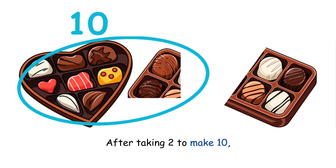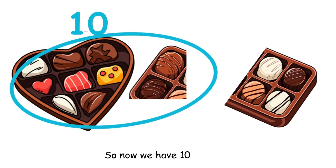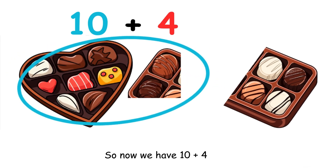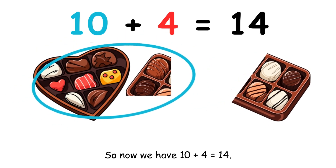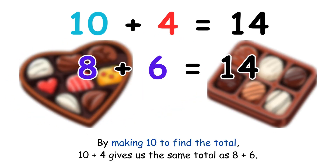After taking two to make ten, we have four pieces of chocolate left in the box. So now we have ten plus four equals fourteen. By making ten to find the total, ten plus four gives us the same total as eight plus six.